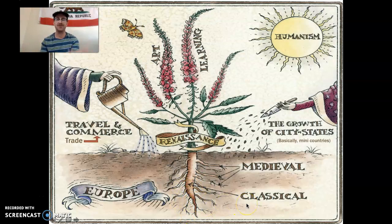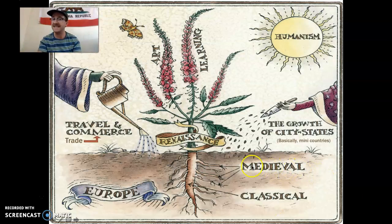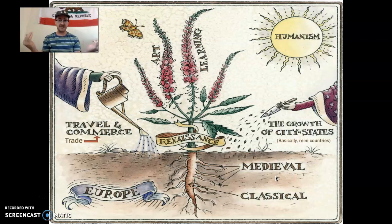It all starts with the root — the lowest root known as the classical period. When you're thinking of the classical period, think about Rome, think about Greece. If you know anything about Percy Jackson, the classical period is basically the Percy Jackson period — all those Greek gods and Roman gods. Then on top of the classical period, you have what we've talked extensively about: the medieval period — kings, queens, lords, ladies, knights, the Crusades, the Inquisitions — ultimately culminating in the Black Death, where almost half of Europe's population died.